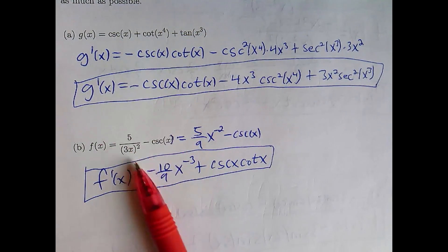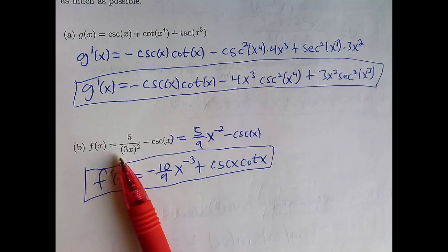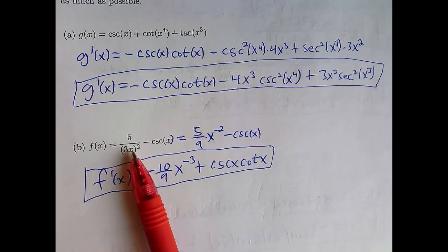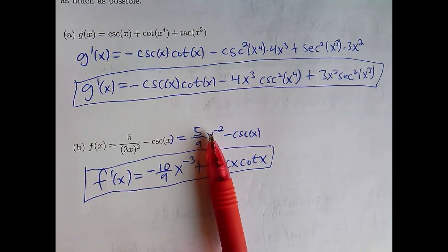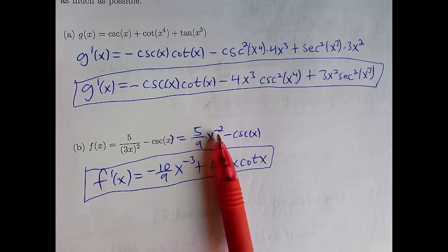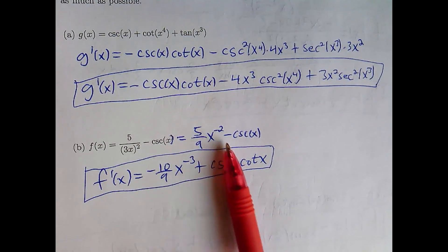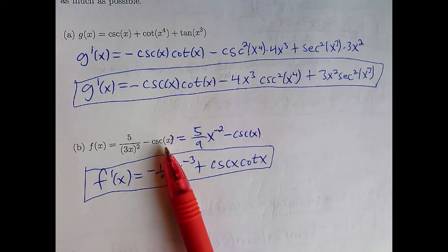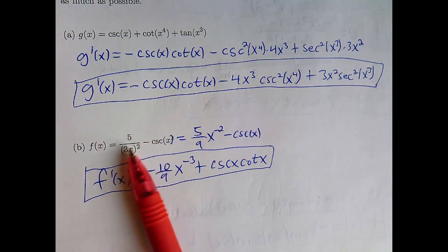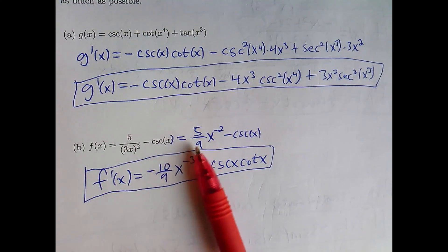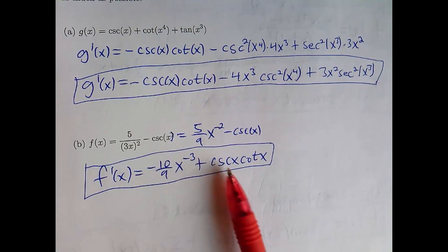This one's kind of tricky — it requires some clever simplification. You basically square the 3 and square the x, so you get 5 ninths. Then you have x squared in the denominator, and when you bring it up it becomes negative. Then you just take the derivative and it's pretty easy. A lot of people try to use the quotient rule, which causes problems. This is the easiest way to do this problem.